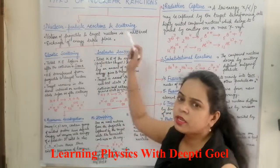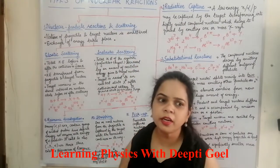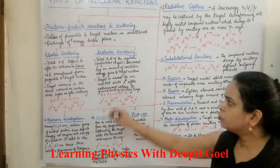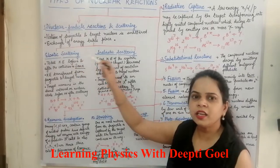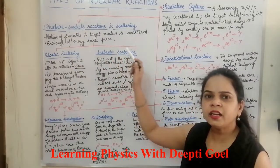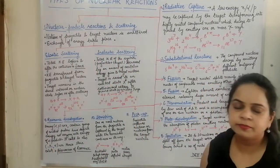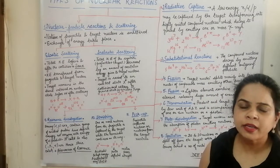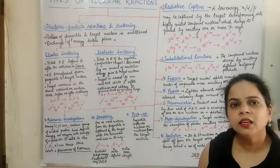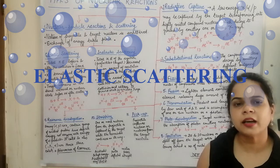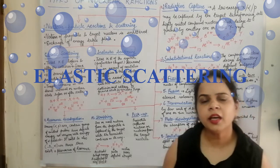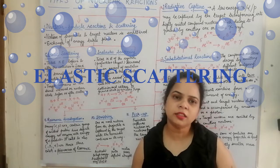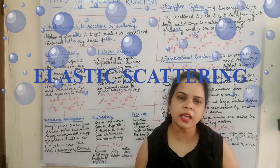The scattering process is further divided into two types: elastic scattering and inelastic scattering. In elastic scattering, the kinetic energy of the system before the reaction and the kinetic energy after the reaction remains the same.